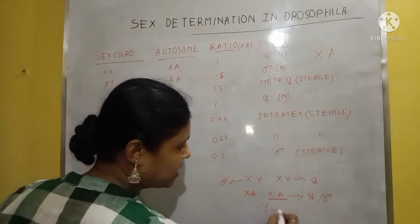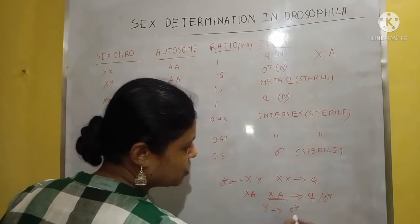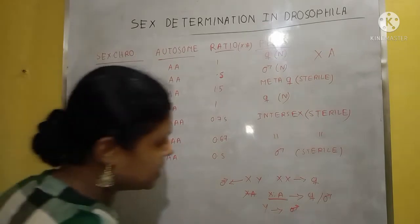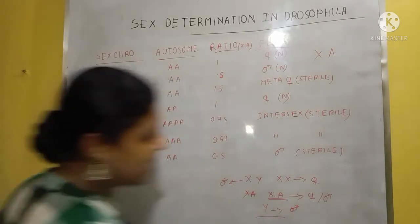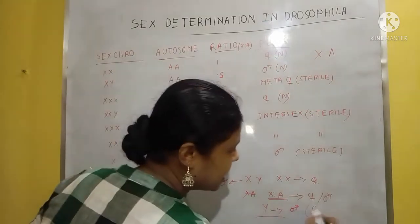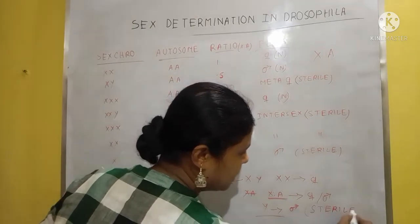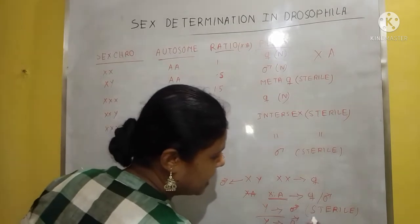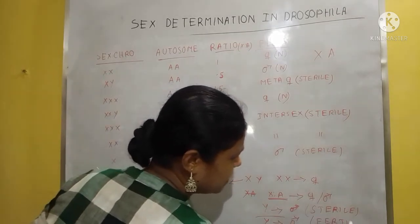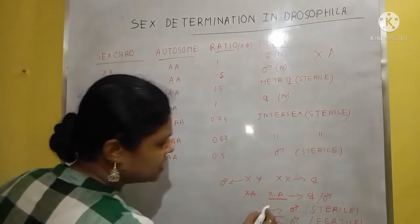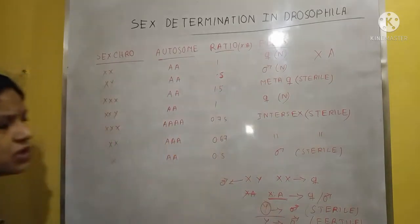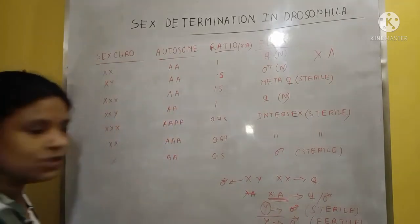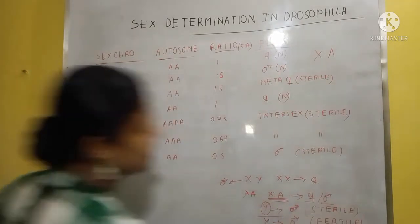The Y gene is very important in male Drosophila. If the Y gene is absent, the male is sterile. If the Y gene is present, the male is fertile. So the Y gene is also important in Drosophila, but it is the X to A ratio that actually determines female or male Drosophila.